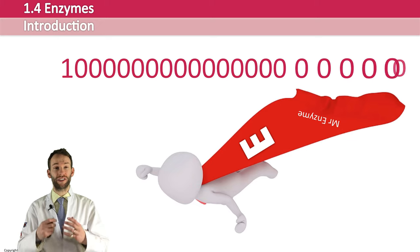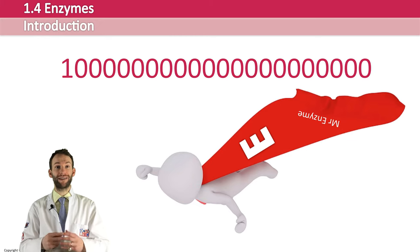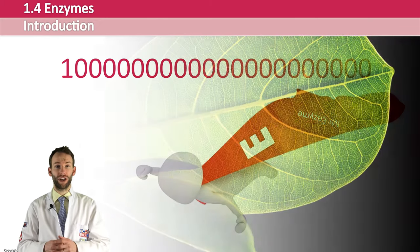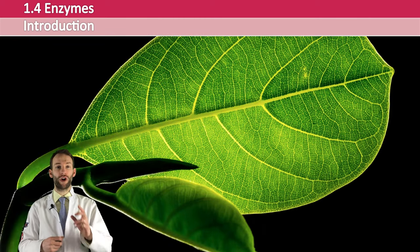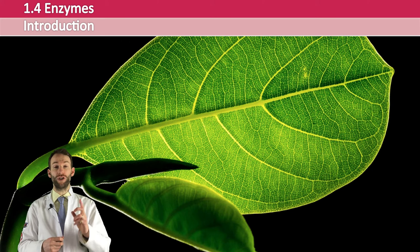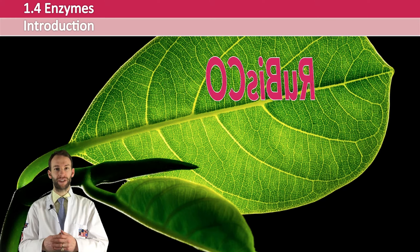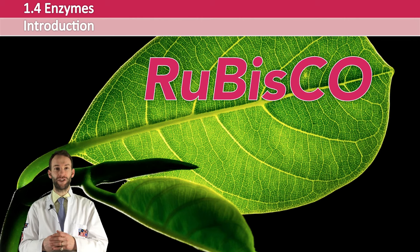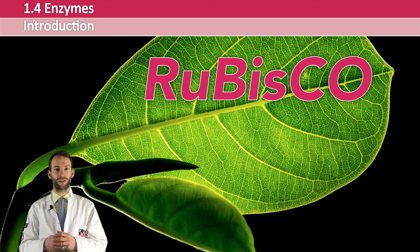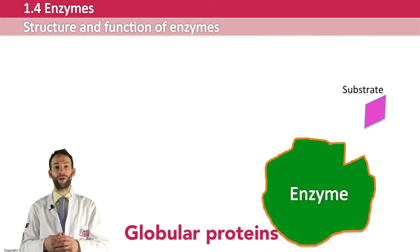Enzymes can actually speed up a reaction by up to 10 to the power of 21 times — they are extremely effective. Good pub quiz question: do you know the most common enzyme on the planet? The answer is ribulose 1,5-bisphosphate carboxylase oxygenase, better known as Rubisco. This enzyme is used in the process of photosynthesis, and you'll learn much more about it later in the course.